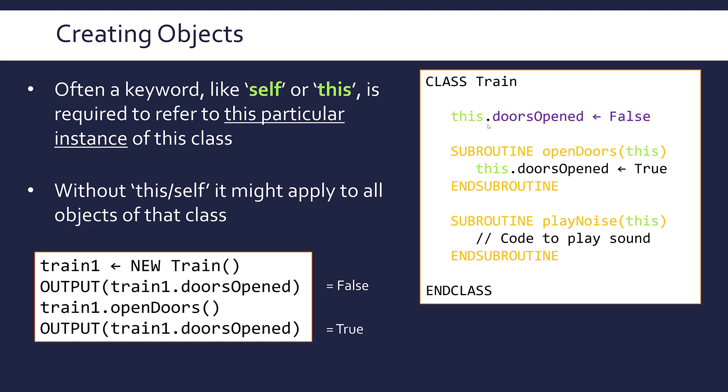In terms of how this affects our main code, this is our kind of main program, this is our class definition, it doesn't affect it at all. It looks exactly the same. The use of the keyword 'this' or 'self' happens inside the class. We can maybe start to see what's going on a little bit if we look at the main code. train1.doorsOpened, the corresponding code is this.doorsOpened. It knows it's this current instance of train we're looking at, not another object.